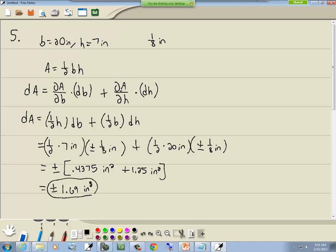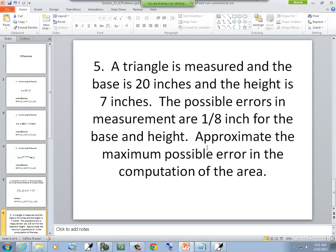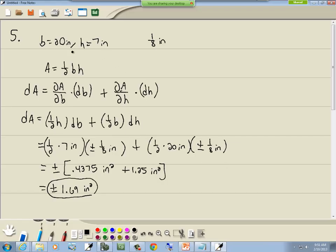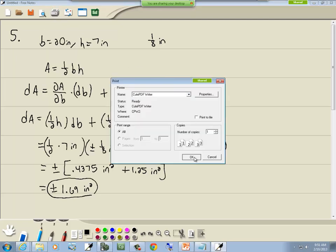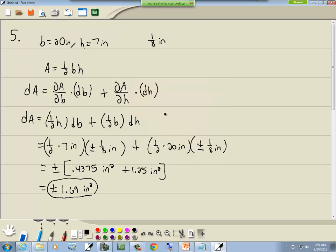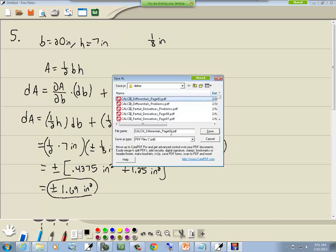That's our maximum possible error in computational area. We might get lucky and when we measure this it actually is 20 inches, but maybe we've got some kind of measure that isn't perfect or we're eyeballing it. Eyeballing it, you're going to have error. So this tells you your maximum error.